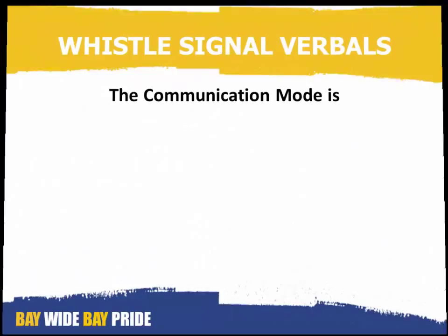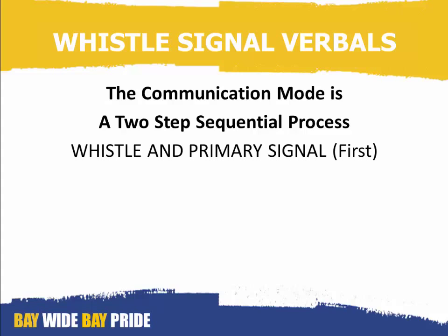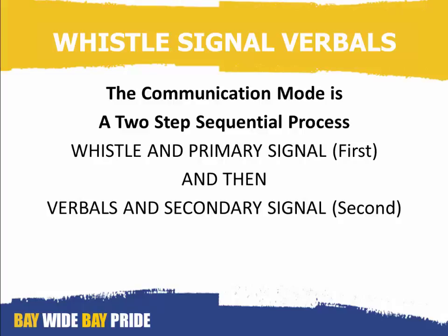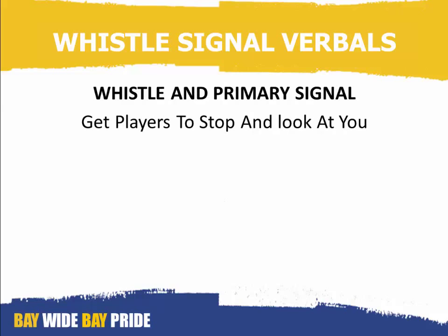The communication mode is a two-step sequential process. Step 1: blow your whistle and perform a primary signal first, and then give a verbal instruction along with a secondary signal second. Your whistle and primary signal gets the players to stop and look at you. Your verbals and secondary signal delivers your decision to them, and also to the crowd and the spectators.